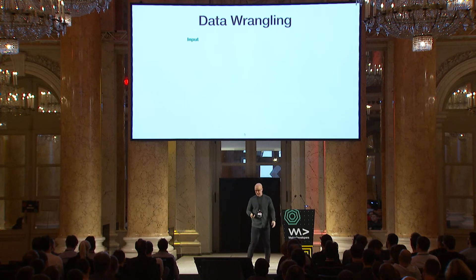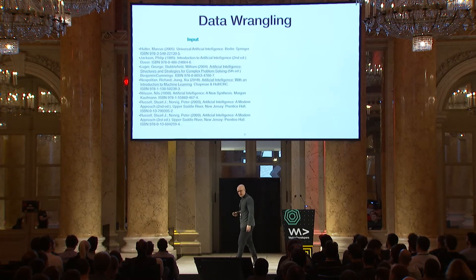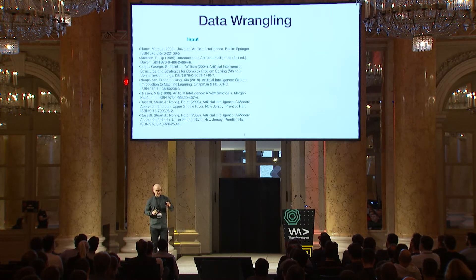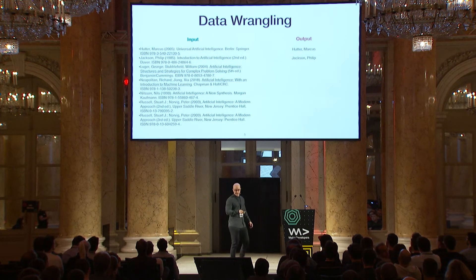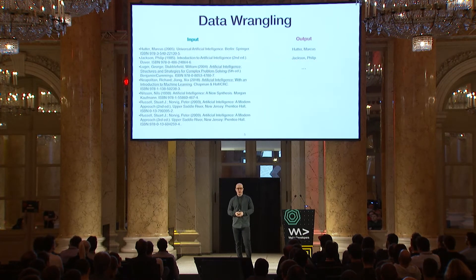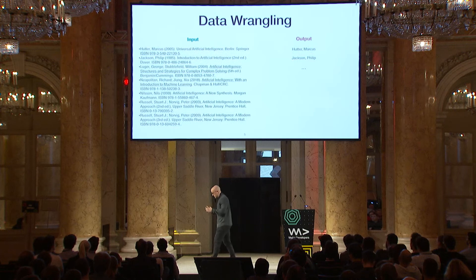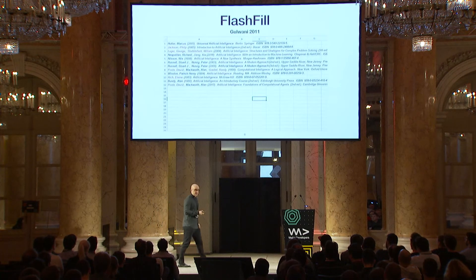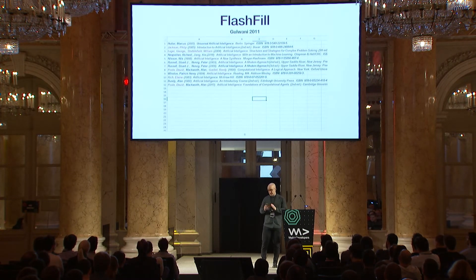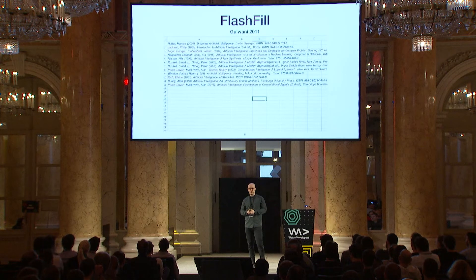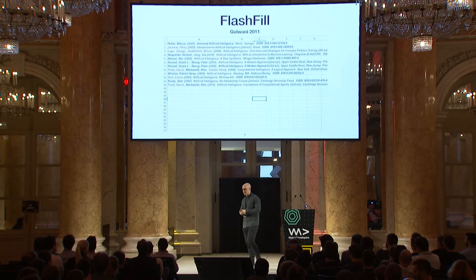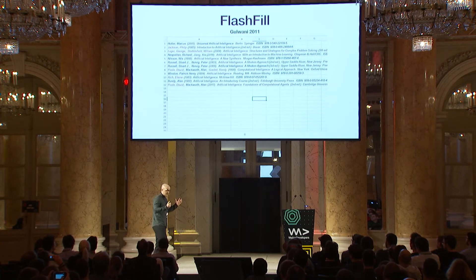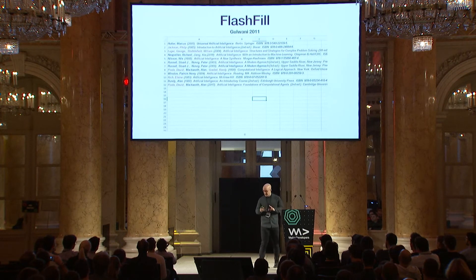I have a toy example where I copied some titles of books about artificial intelligence from Wikipedia, and what I'd like to do is get the author names and some other information as output. It turns out I can solve this task using an advanced data analytics tool you may have heard of — it's called Microsoft Excel. I'll show a recording: just entering the author of the first two books, then using Flash Fill to get the rest. I also want the year each book came out — again, I use Flash Fill, and it's done. This works equally well in more complicated settings and is really quite astonishing.